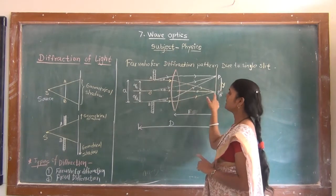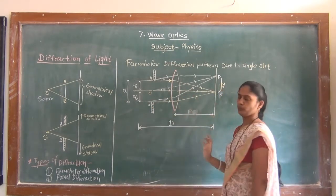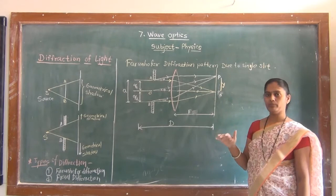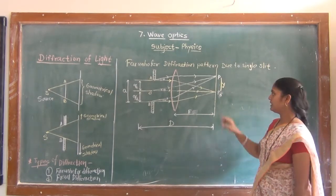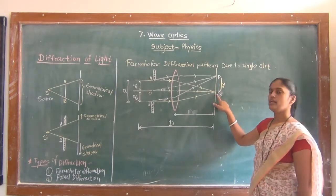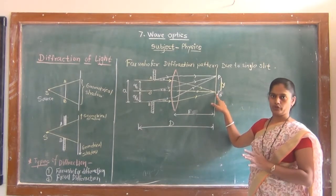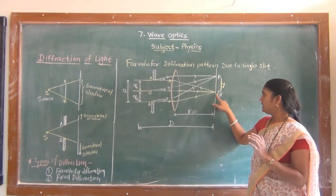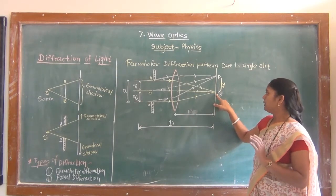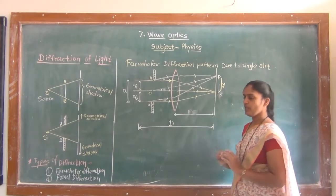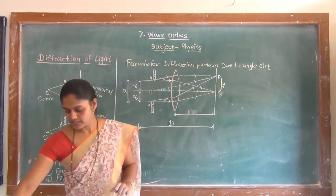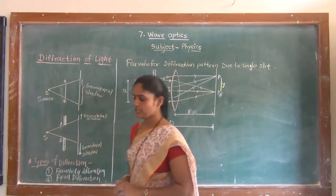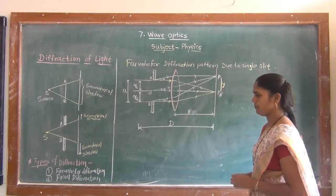Consider rays A to P0 and D to P0 — their path lengths are the same. So we get here a central bright point. Now let us discuss the central maxima, also called principal maxima.